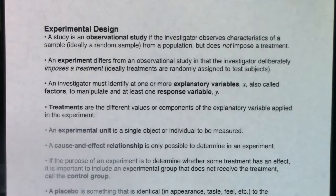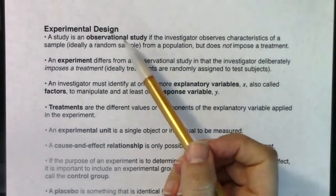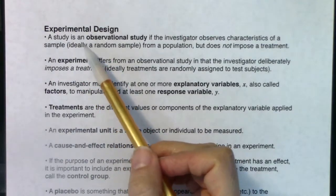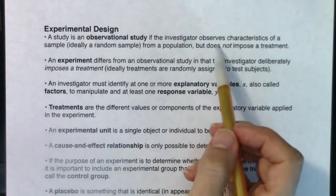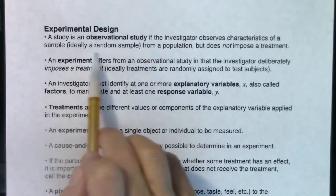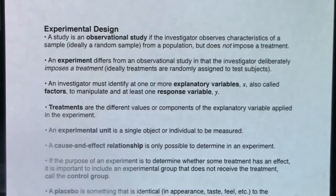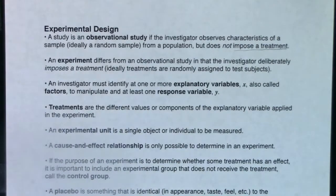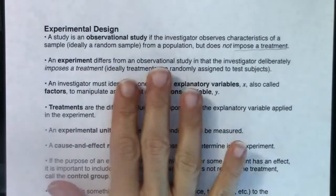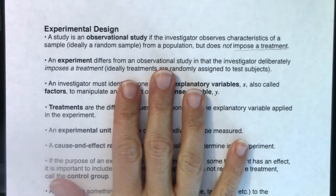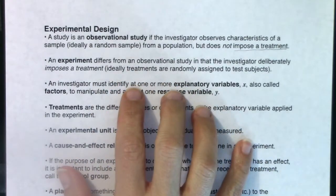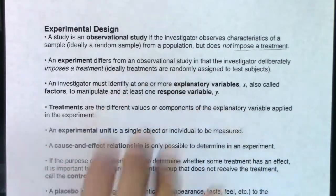Let's pick up some vocab terms for experimental design. When we talk about a study, we break it into one of two categories: an observational study or an experiment. A study is officially an observational study if the investigator observes characteristics of a sample — ideally a random sample from a population — but does not impose a treatment. An experiment differs in that the investigator deliberately imposes a treatment, and ideally treatments are randomly assigned to the subjects.